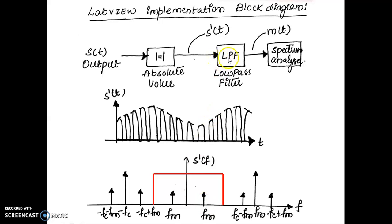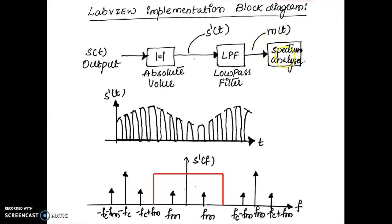If you pass this signal s'(t) through a low-pass filter — shown by the red response — you block the higher frequency components. What you get is only the modulating signal. So the output of the low-pass filter will be the modulating signal, which you can observe at the spectrum analyzer.